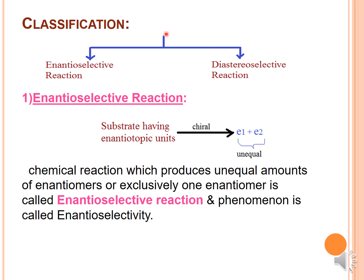Moving on to classification: stereoselective reactions are classified into two types — enantioselective and diastereoselective reactions. In enantioselective reactions, you take a substrate which has enantiotopic units. In that substrate there should be one enantiotopic unit, and in the presence of a chiral reagent — like lithium aluminum hydride — you should result in two enantiomers in unequal amounts. The chemical reaction which produces unequal amounts of enantiomers, or exclusively one enantiomer, is called an enantioselective reaction.